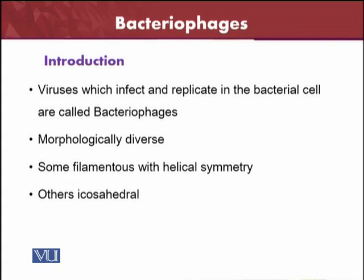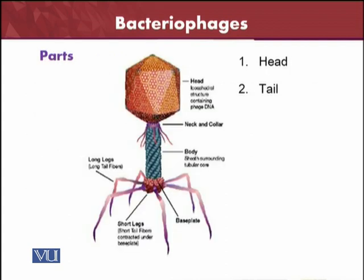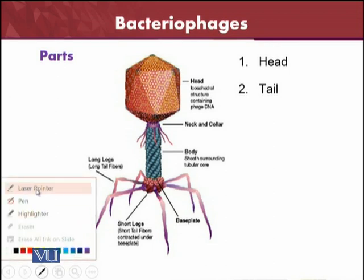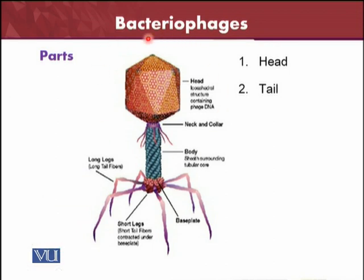These are morphologically very diverse viruses. Some are filamentous with helical symmetry, and others are icosahedral. We will see its structure. Here you can see different parts: this is the helical infrastructure, and most are icosahedral. This is the head, this is the body — three parts — and these are the filaments, the long legs.